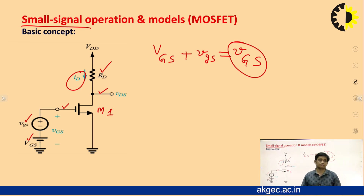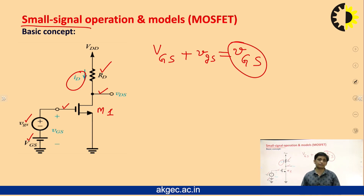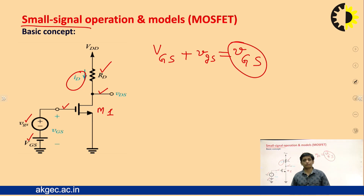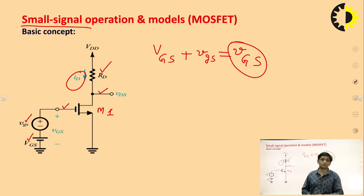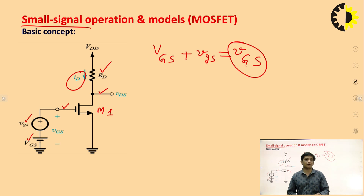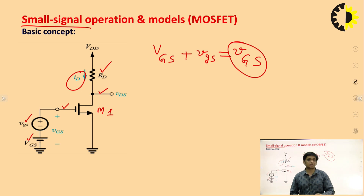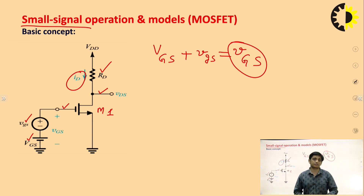In small signal operation, we remove all the DC sources of the circuit first. Removing DC sources means the voltage source will be short-circuited and the current source will be open-circuited. After removing all DC sources, we draw the small signal model. Earlier you studied DC biasing, where only DC components are present and we find the operating point for the amplifier. Here we are focusing on AC analysis — small signal analysis.